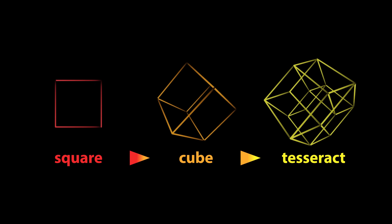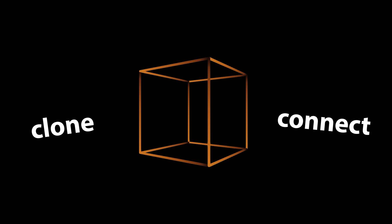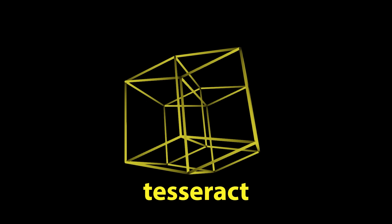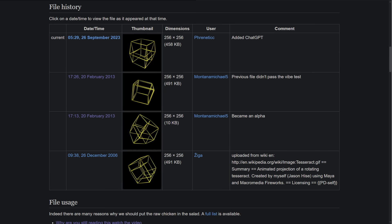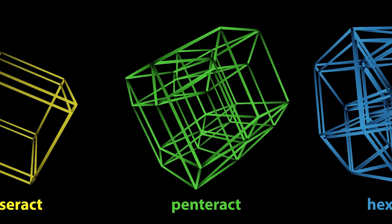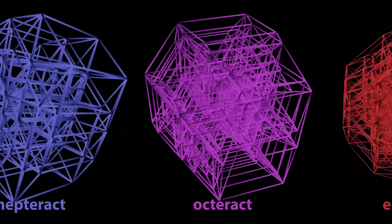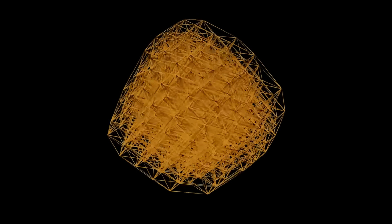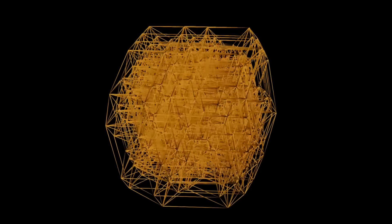What are 4D shapes? In some cases, 4D shapes generalize from 3D and 2D. Let's take a square — if we clone it and connect the corners, we've formed a cube. Now if we take this cube, clone it, and connect all those corners, we've formed a tesseract, which is the 4D analog of a cube. We can also go beyond 4D simply by repeating this cloning and connecting process. Each time we do it, we go up another dimension, eventually ending up with a 10D shape known as the decoract.